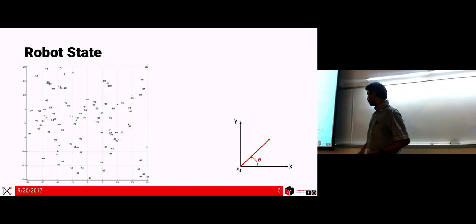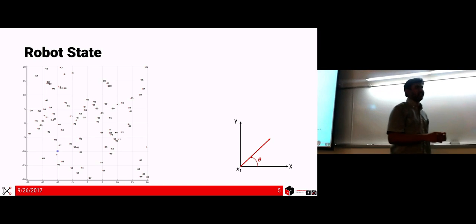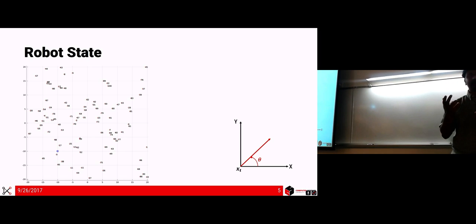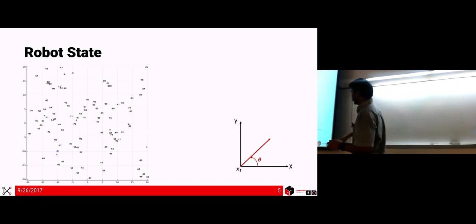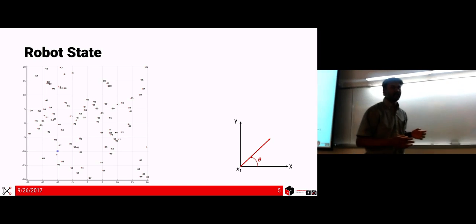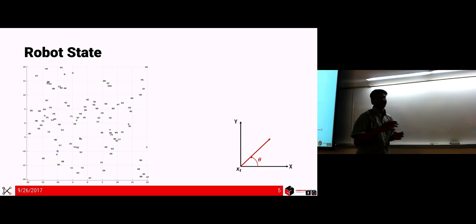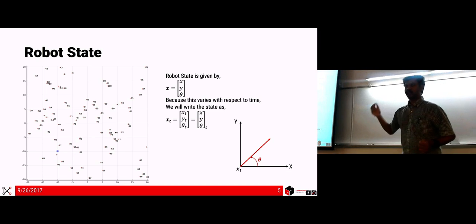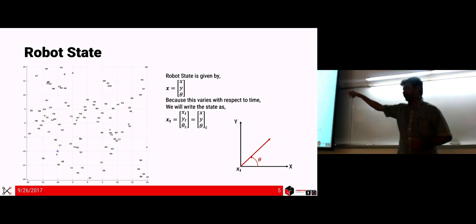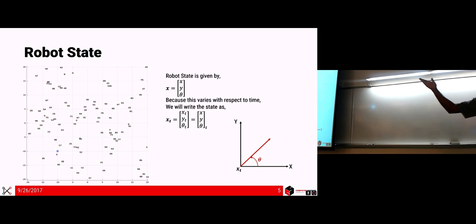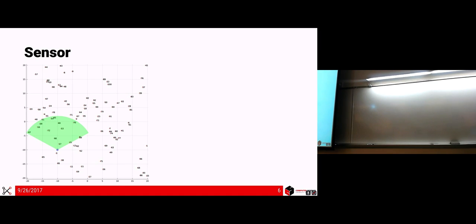The robot state is denoted by bold-face x subscript t, which is the state vector — not just the x coordinate. The t means it's time-varying. The robot state is given by three values: x, y, and theta, where x and y are the coordinate values and theta is the angle measured anticlockwise from the x-axis. Since it varies with time, I put a subscript t there.